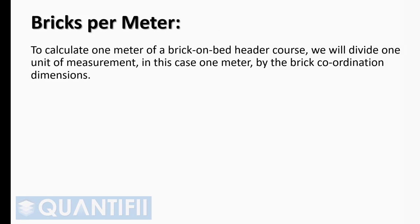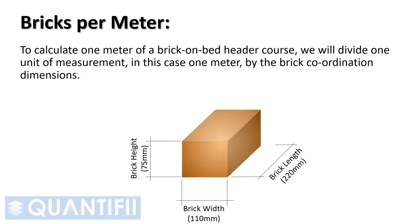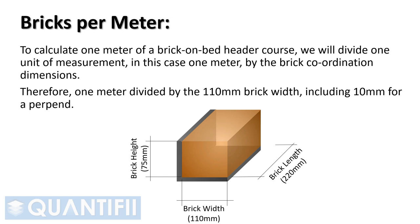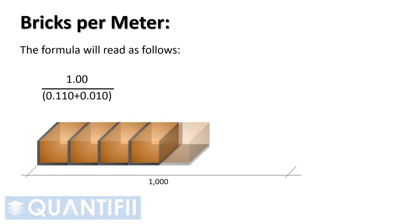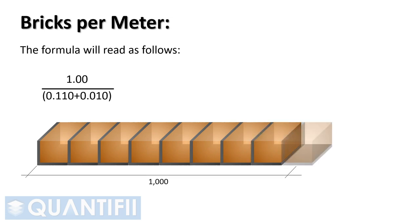To calculate one meter of a brick on bed header course, we divide one unit of measurement — in this case one meter — by the brick coordination dimensions. Therefore, one meter divided by the 110 mm brick width including 10 mm for a perp end. The formula reads: 1 ÷ (0.11 + 0.01) = 8.33 bricks per meter, which we can round up to 9 bricks per meter.